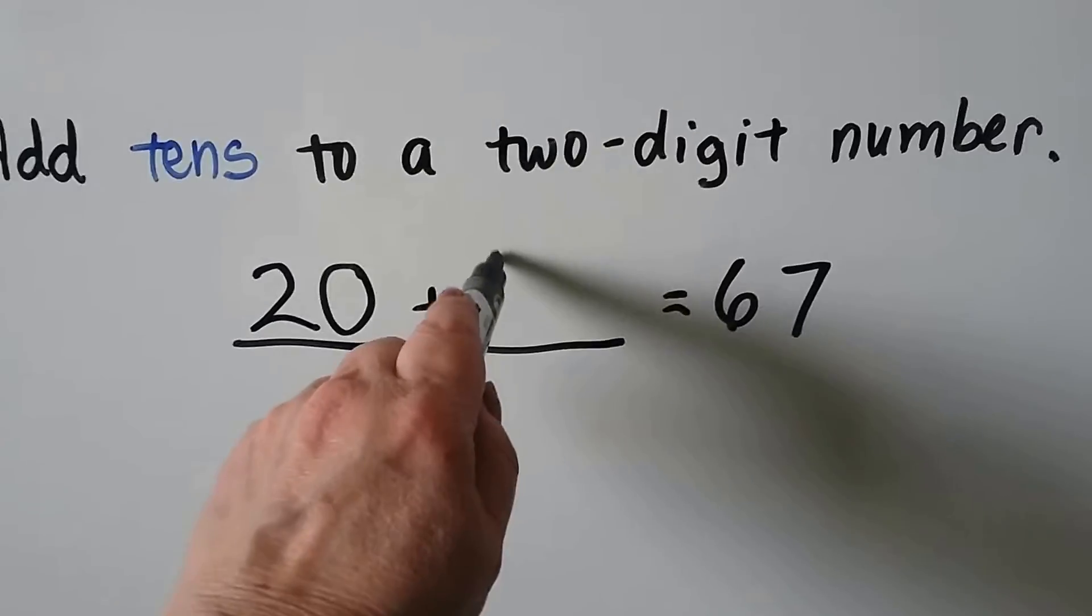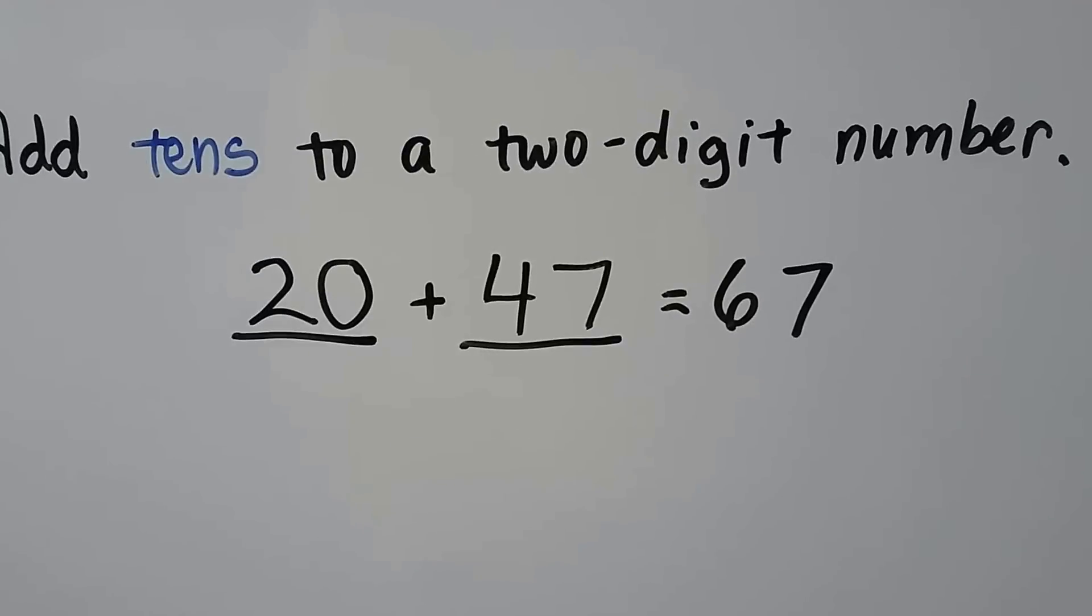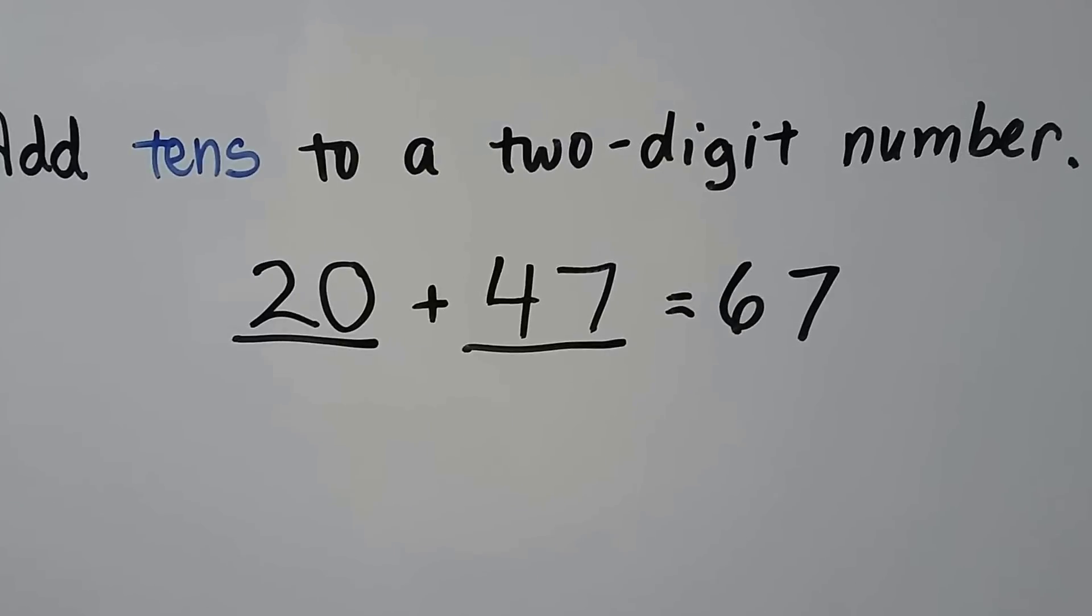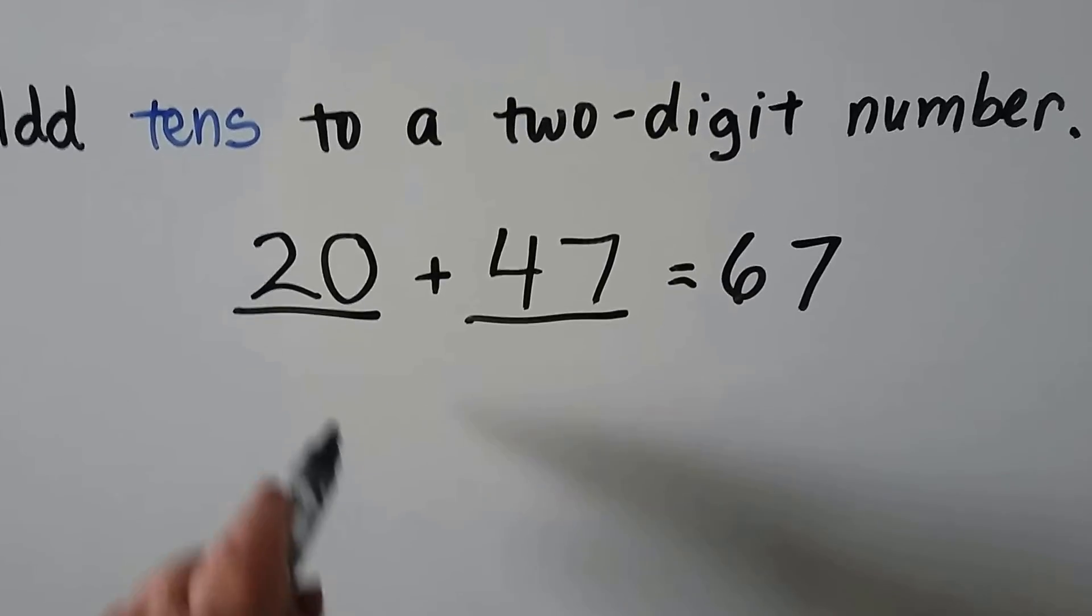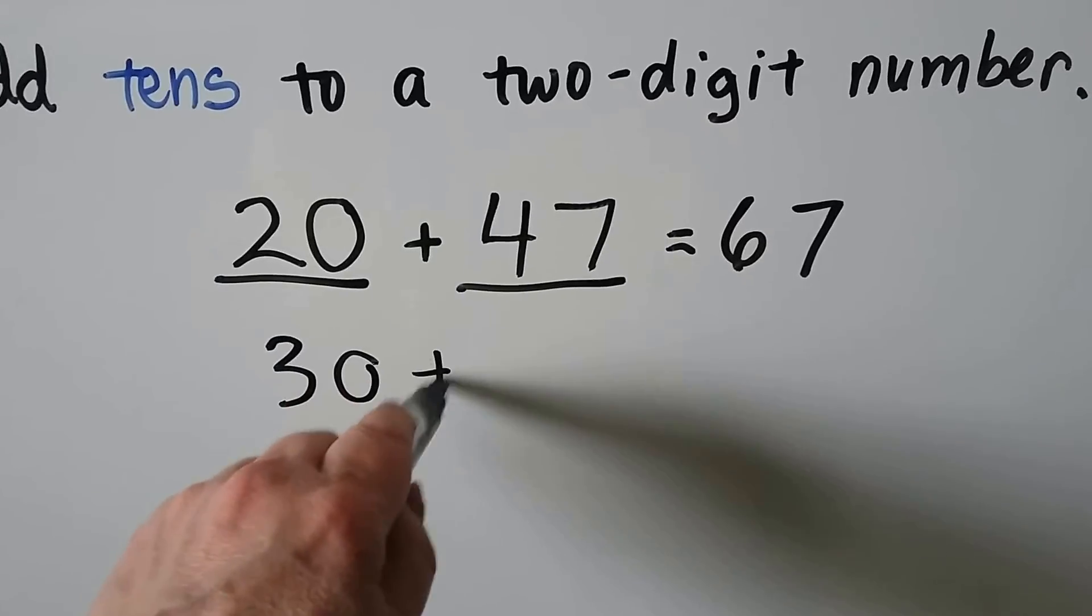If we take 2 of them away, that's going to leave 4 tens. So that would be 20 plus 47. We could even do 30 plus 37.